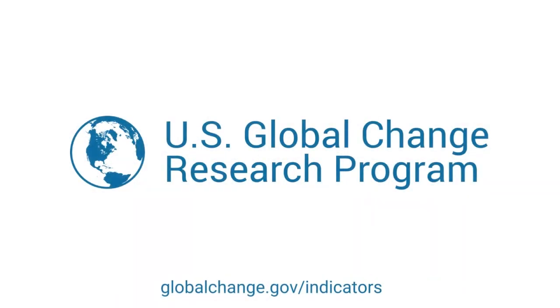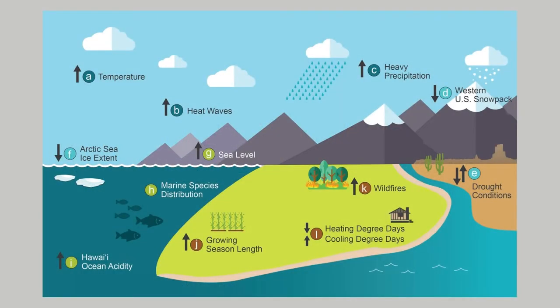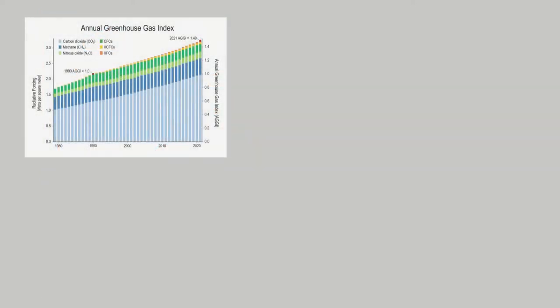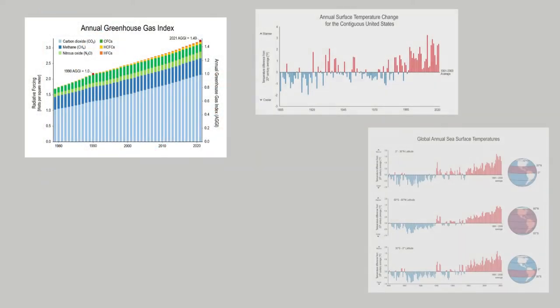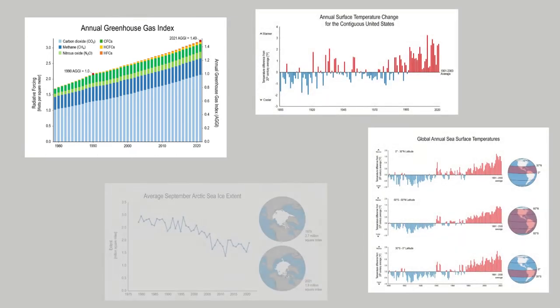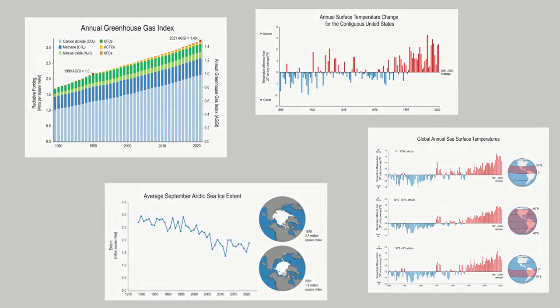Climate indicators show trends over time in key aspects of our environment, including greenhouse gas levels in the atmosphere, temperatures across land and sea, and extent of Arctic sea ice. To learn more about climate indicators, make sure to check out our separate video here for a quick introduction.